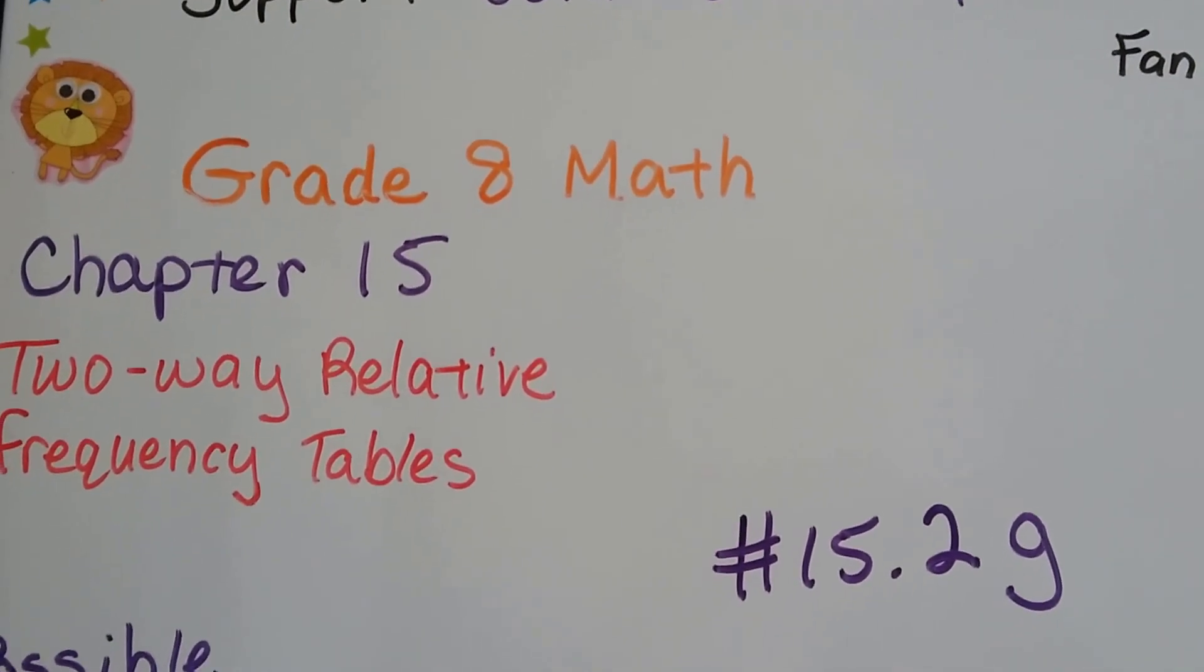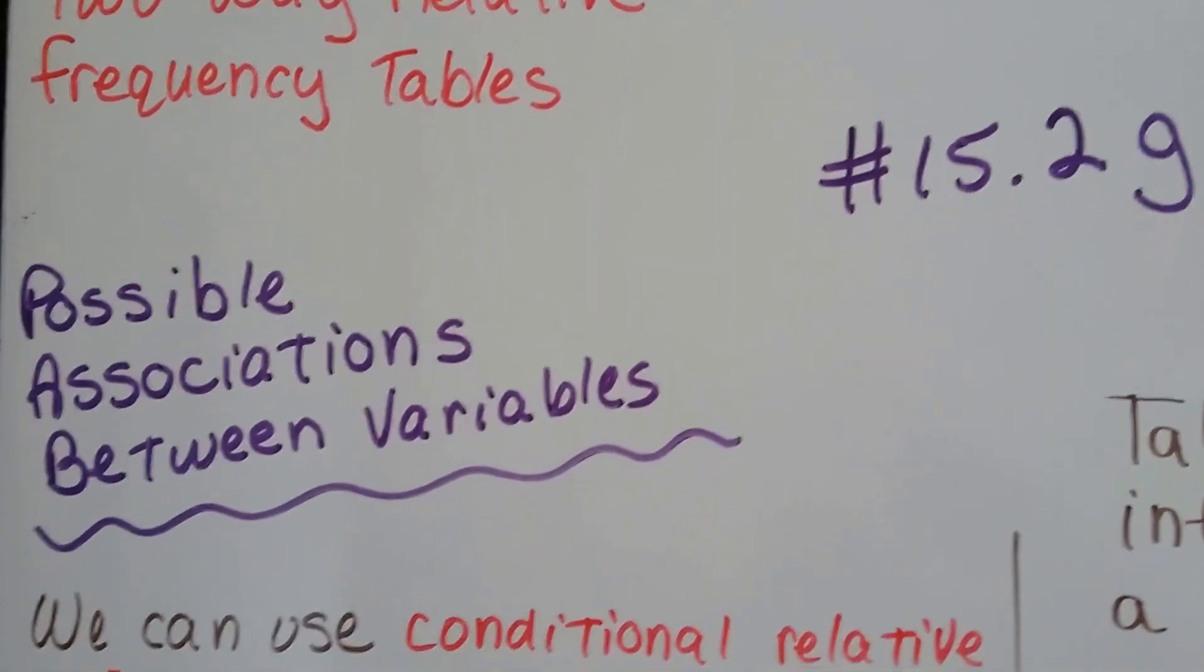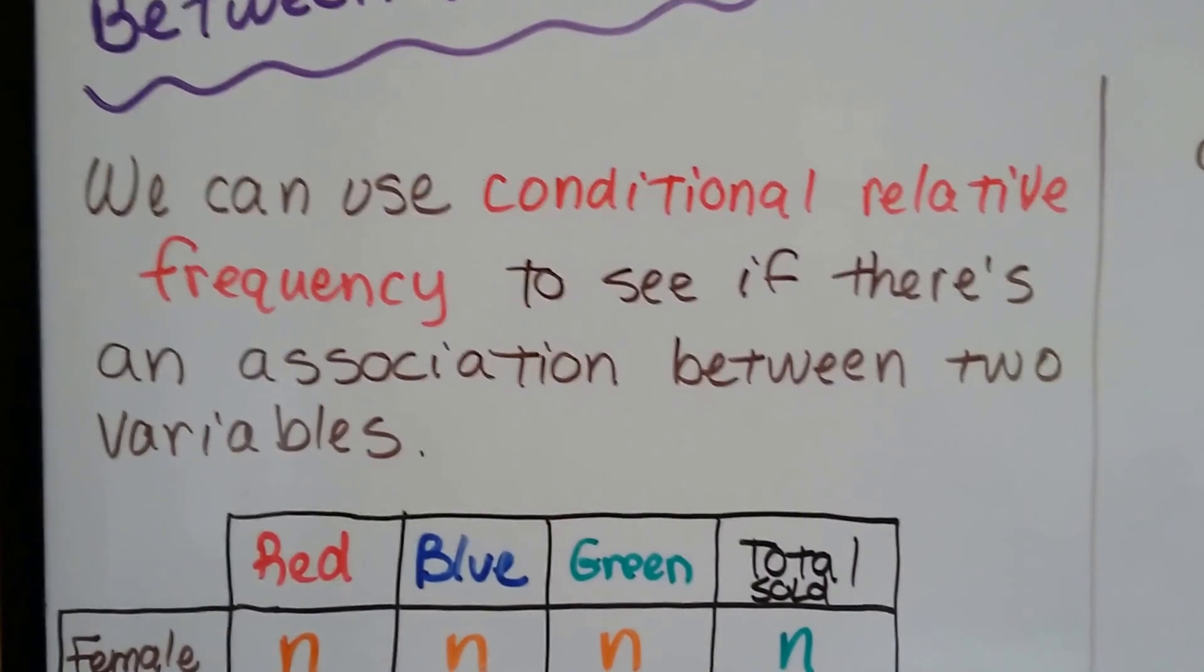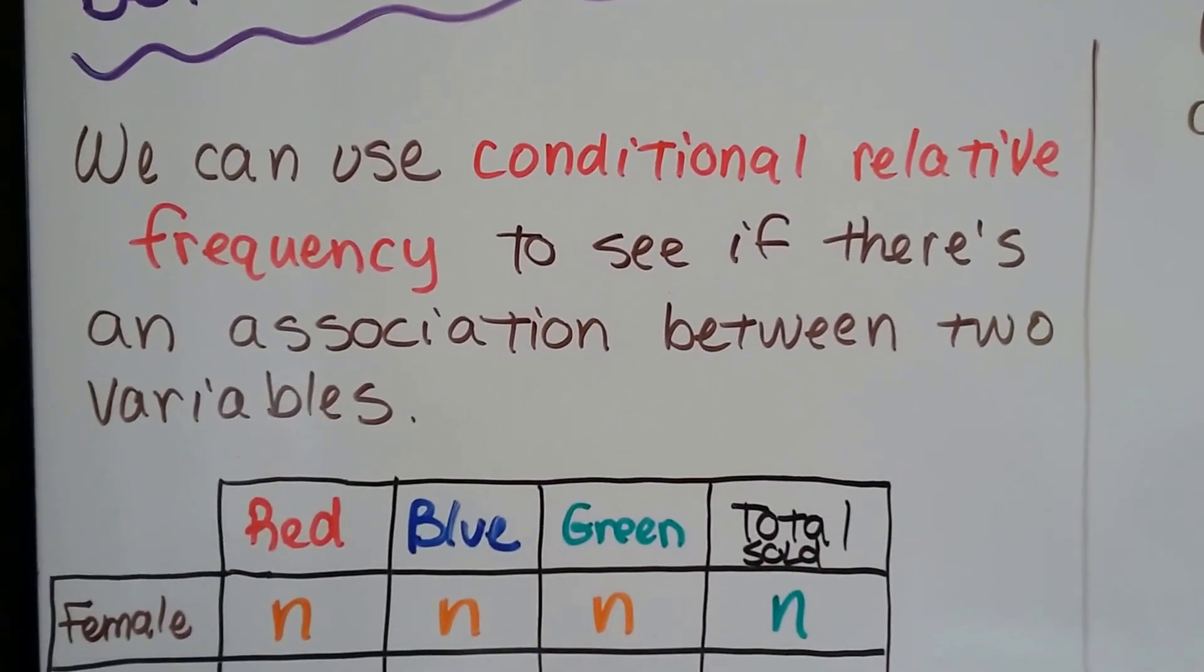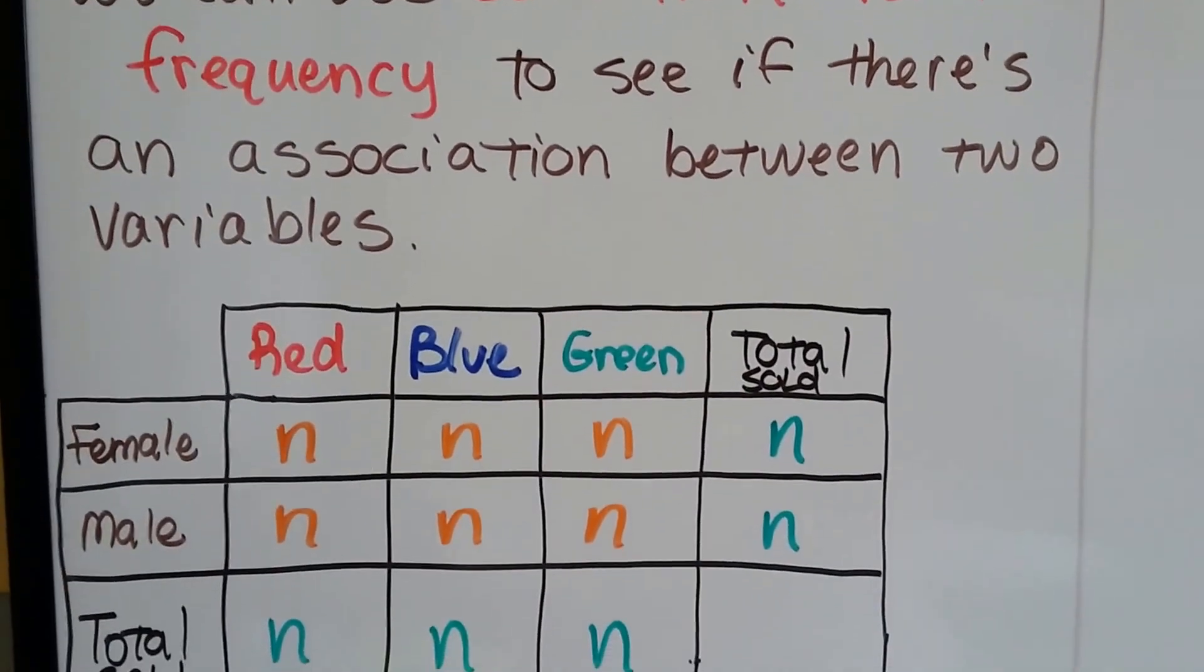Grade 8 math number 15.2g is possible associations between variables. We've been talking about conditional relative frequency, we did in the last video. We can use conditional relative frequency to see if there's an association between two variables.